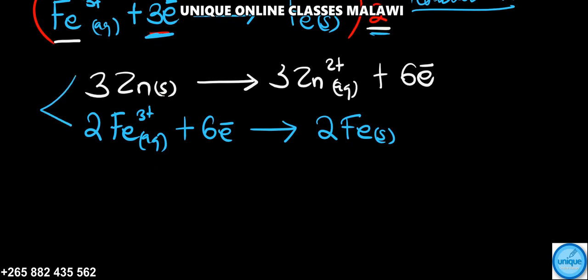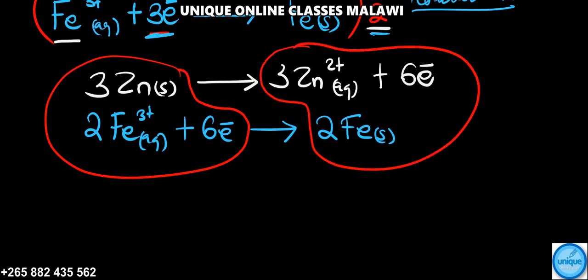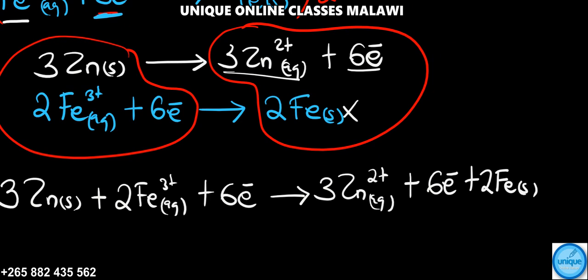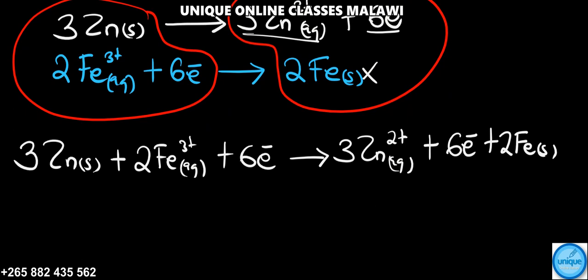The next is to combine. When combining the reactants, we have: 3Zn solid plus 2Fe³⁺ aqueous plus 6 electrons gives 3Zn²⁺ aqueous plus 6 electrons plus 2Fe solid. This is our balanced equation. The next we need to cancel the electrons.